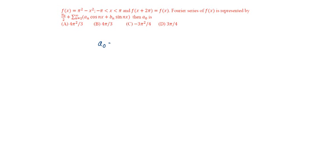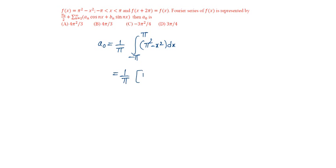a₀ is equal to 1 by π, integral from minus π to π of (π² minus x²) dx, which is equal to 1 by π. On integrating, it is π² times x minus x³ by 3.